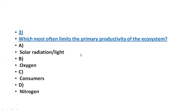Which factor most often limits the primary productivity of the ecosystem? For primary productivity — for plants, blue-green algae and all those things — photosynthesis is required. The main energy source for photosynthesis is solar light or solar radiation. If solar light is not there, primary productivity will not occur. So the correct answer is solar light or radiation.